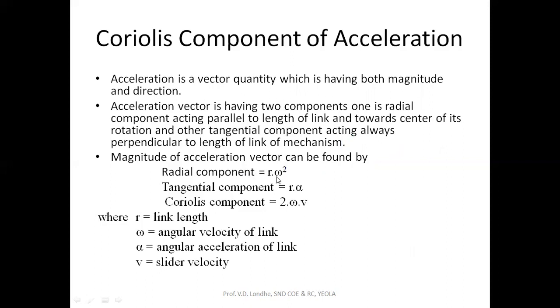For radial, it is product of link length into square of angular velocity. The tangential component is the product of link length into angular acceleration. The Coriolis component is two times the product of angular velocity into the slider velocity. This is the basic difference for the acceleration component and Coriolis component of acceleration.